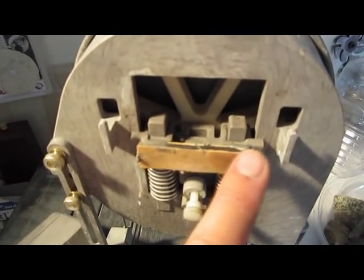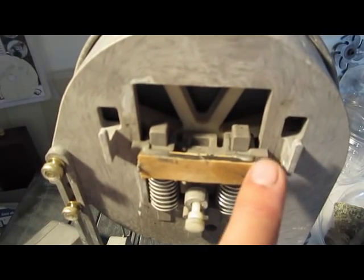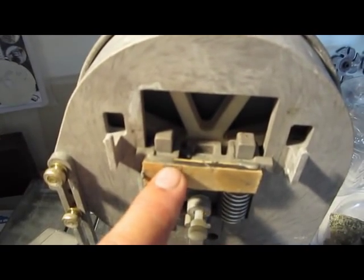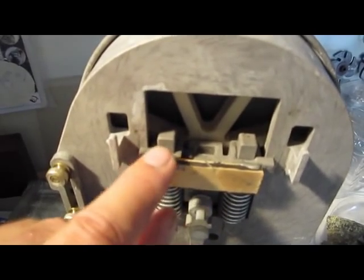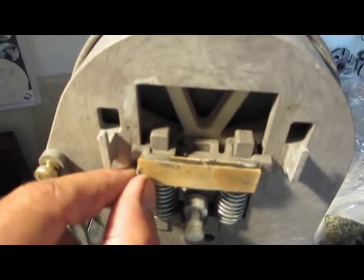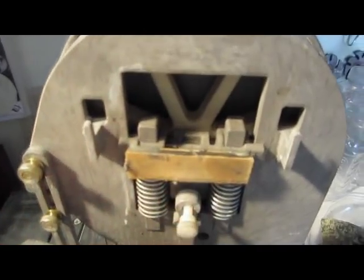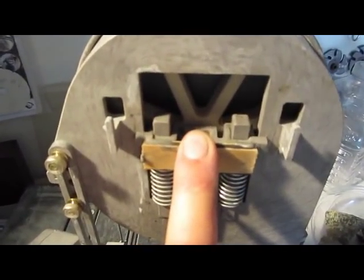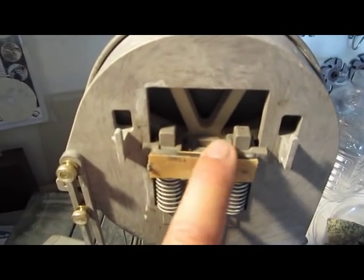And I basically clamped one, I put some JB Weld under this, clamped it down with a clamp, positioned the other one, put JB Weld in all the spots that it needed it, clamped that down and let it set overnight. I have been using this unit now for probably five to ten times as long as I used it before it broke and this has been working amazingly well.